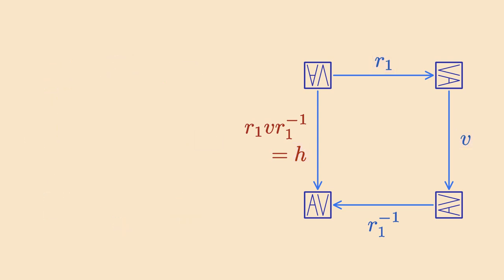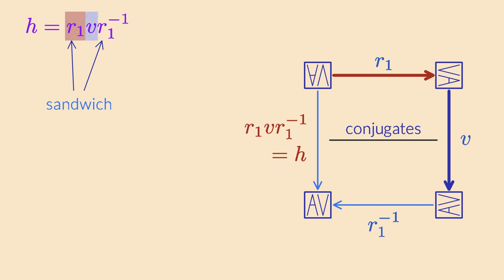In a diagram like this one, the vertical and horizontal flip are called conjugates of each other. One element is a conjugate of the other if you can write it in this form. You sandwich one of the conjugates between an element and its inverse. The result is the other conjugate. See if you can spot the sandwich in the diagram. We apply a rotation, then we flip, and finally we rotate back using the inverse of the first rotation. The sandwich always has to consist of an element and its inverse. That's the only way to make the diagram close up nicely.